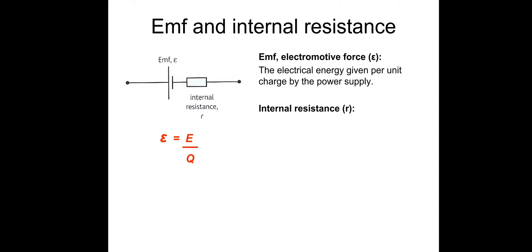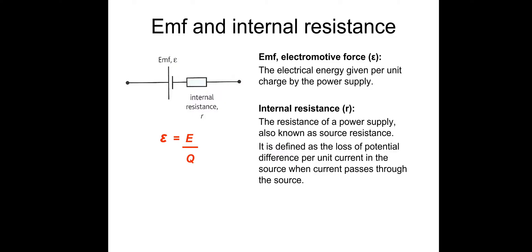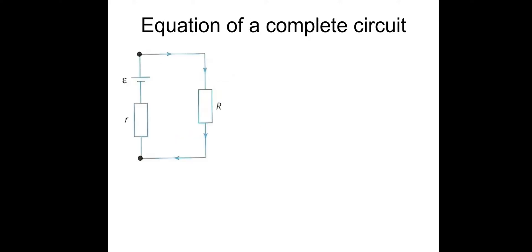Internal resistance is the resistance of a power supply, also known as source resistance. It is defined as the loss of potential difference, or voltage, per unit current in the source when current passes through it. Inside the internal resistance you will lose voltage — that will become more apparent shortly.